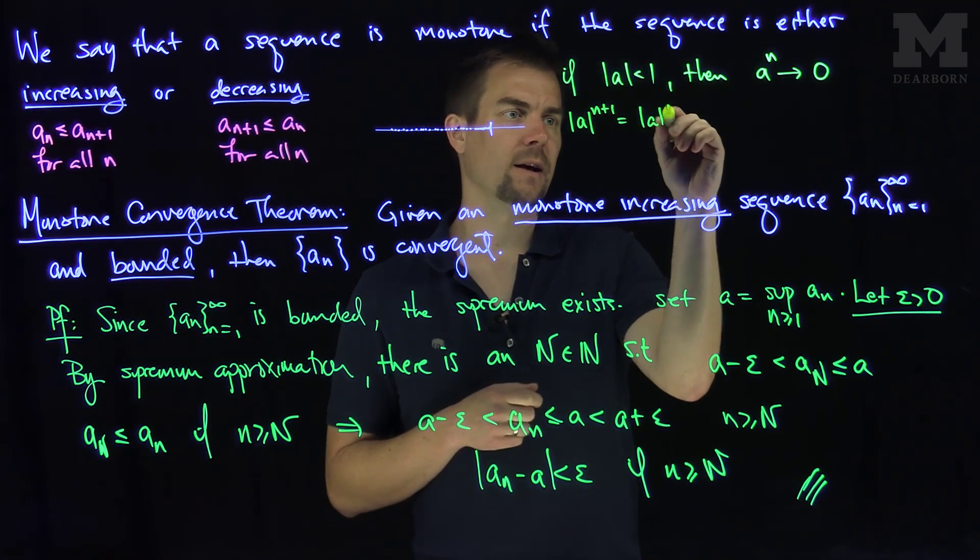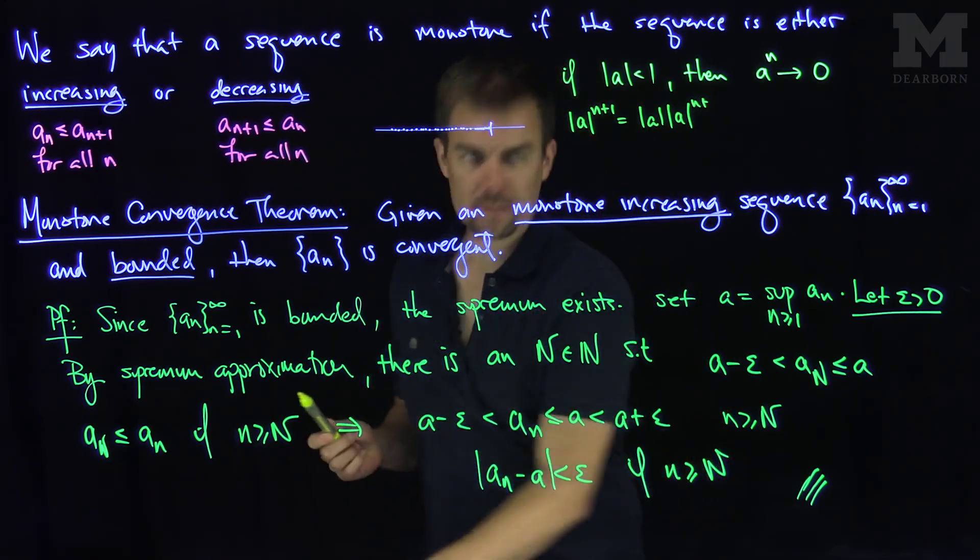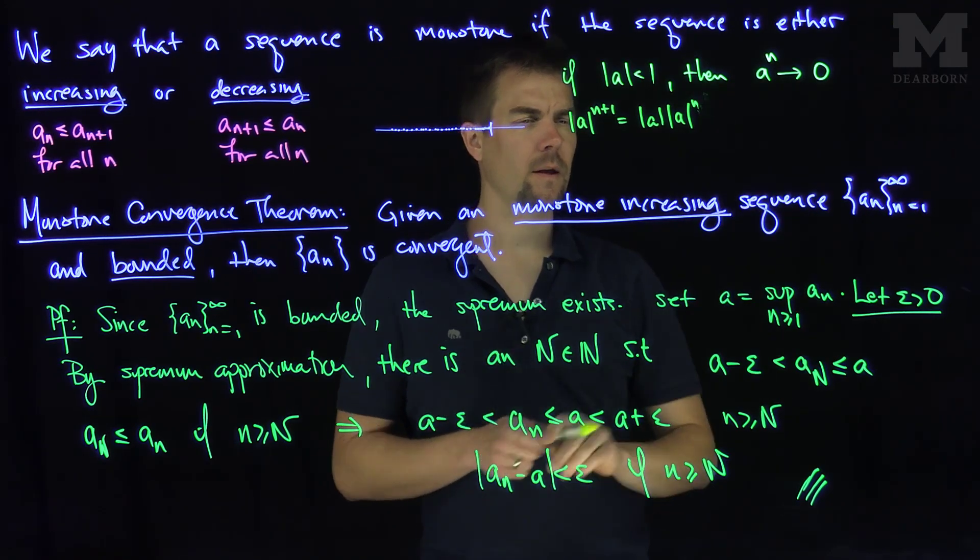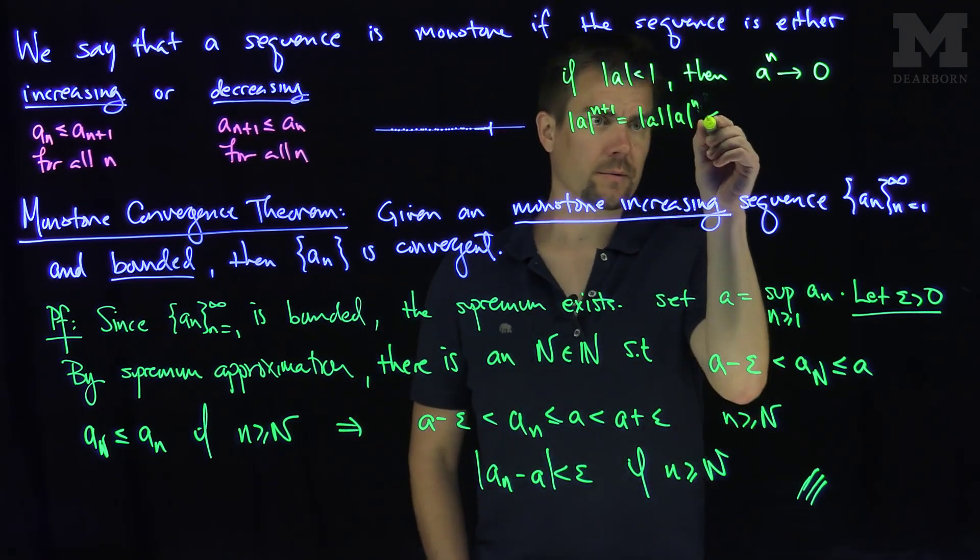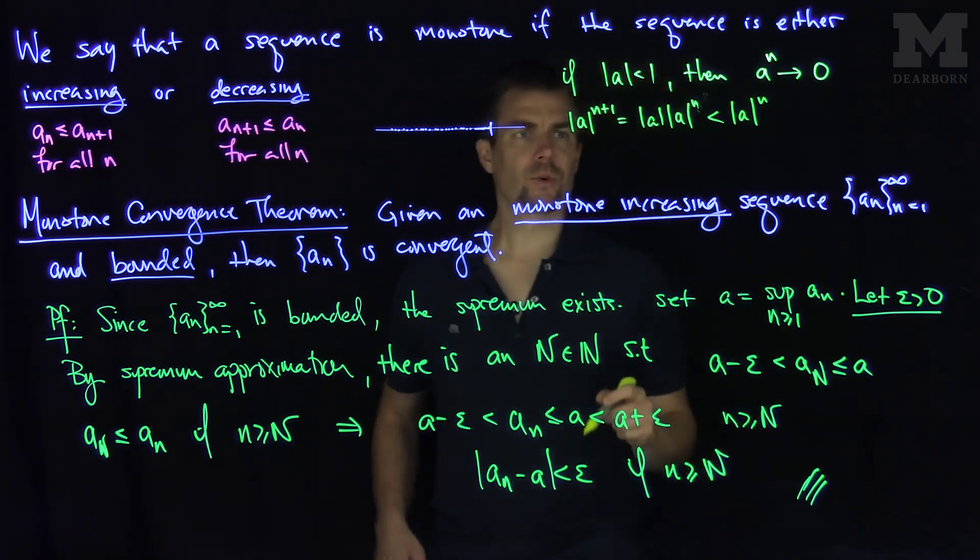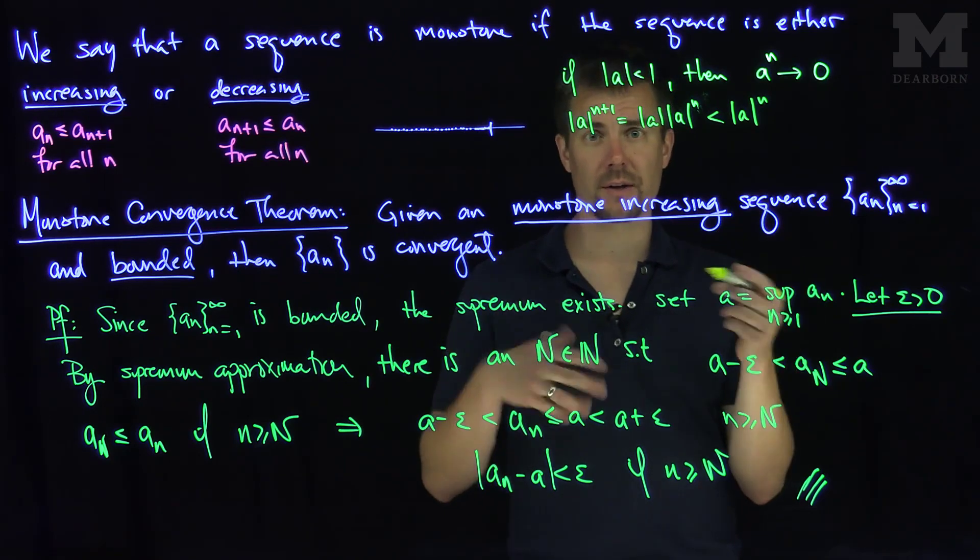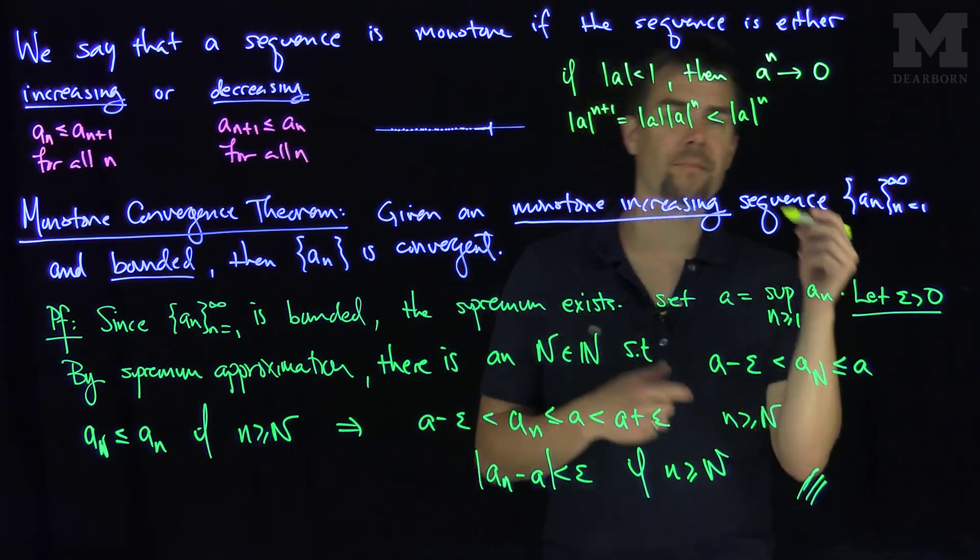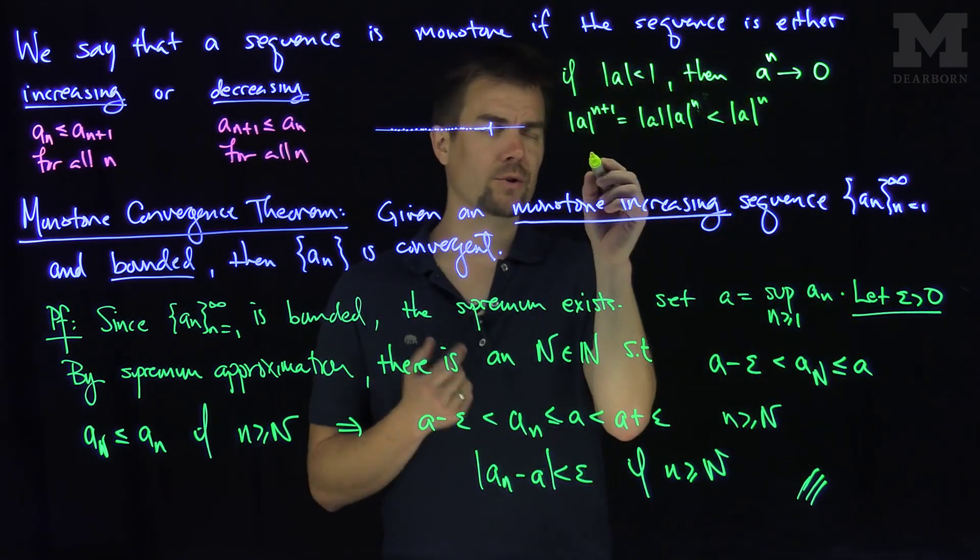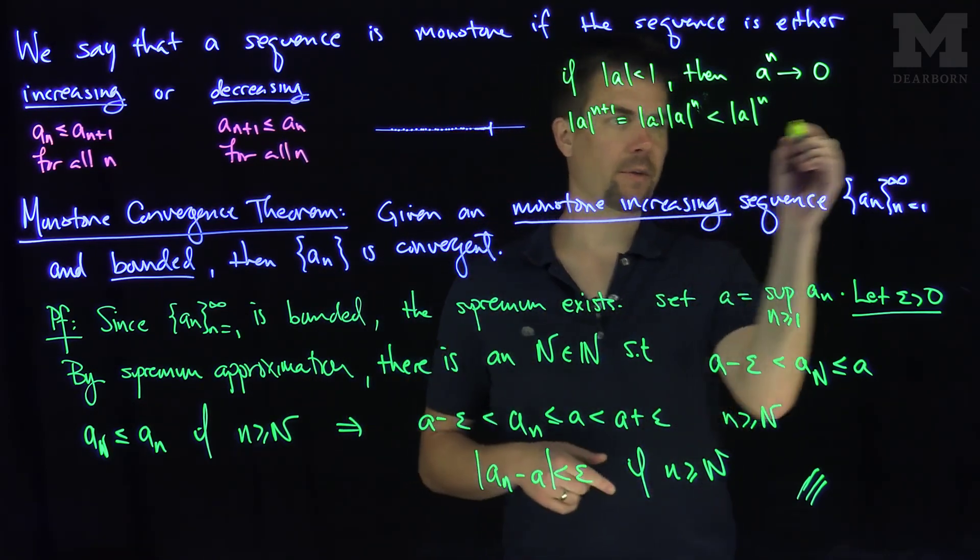|a| times |a^n| is going to be strictly less than |a^n|. So what we have here is a decreasing sequence, and the decreasing sequence converges to its infimum. In particular, if we let n go to infinity, these sequences will converge to the same thing.